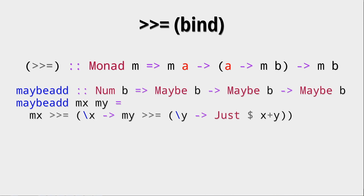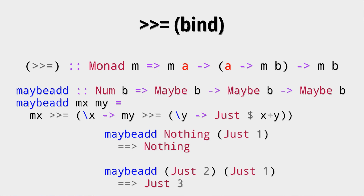From this we can build something even crazier, where we do this with two maybes. Now we have two maybes that we use the bind operator on in order to get the internal values, and then we sum them together and throw them into the Just constructor. If the second argument is Nothing, we get Nothing. If the first argument is Nothing, we get Nothing. We only get a Just of any value if the two values we throw in are Justs.